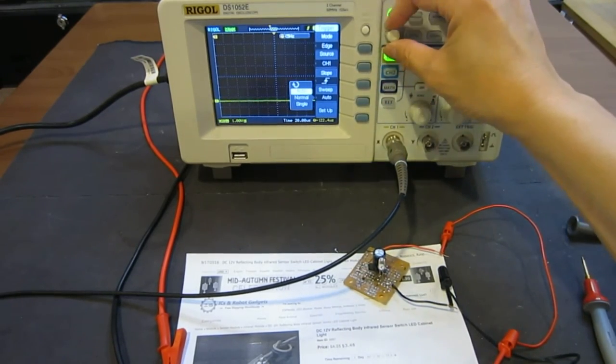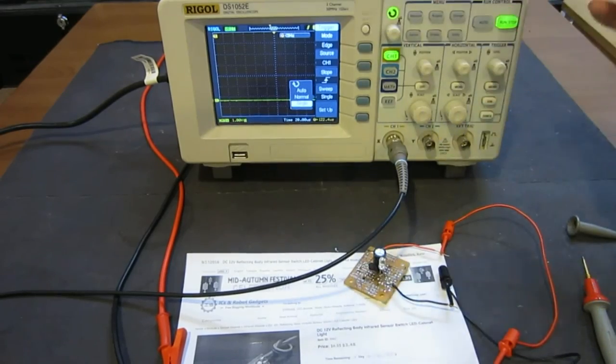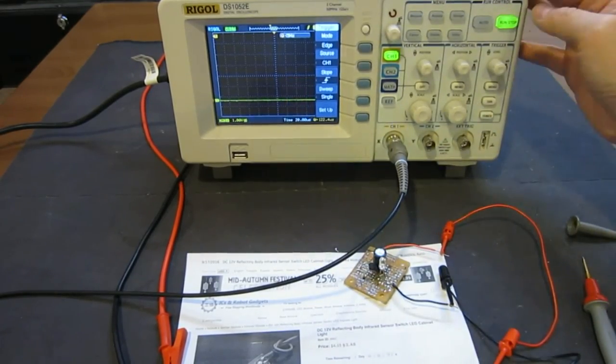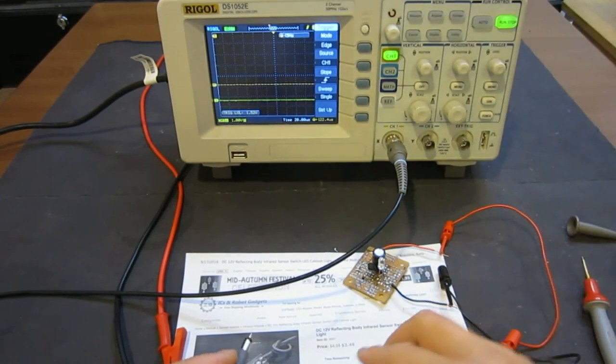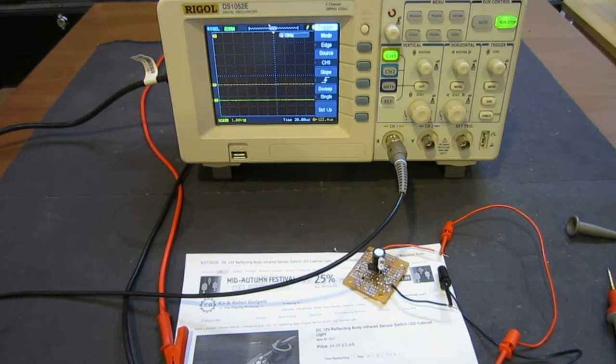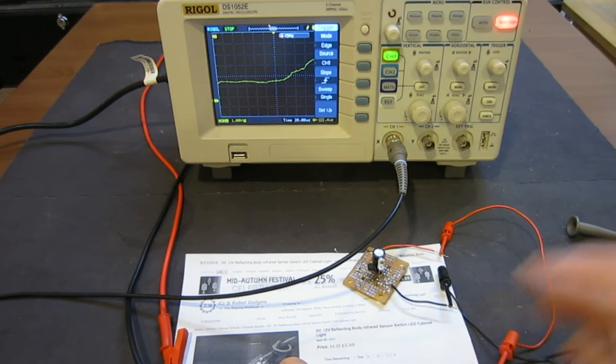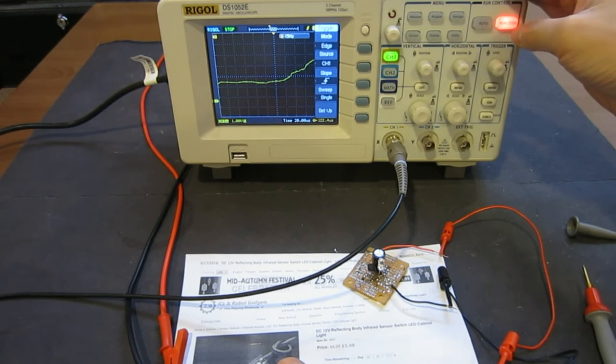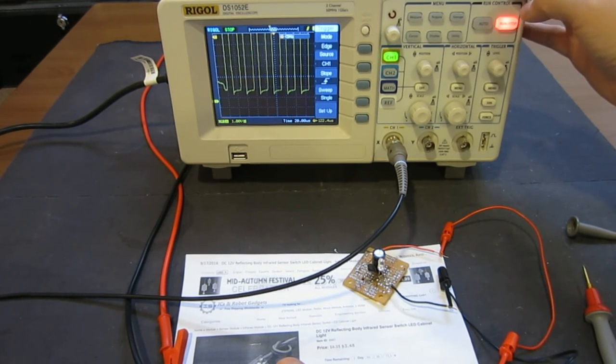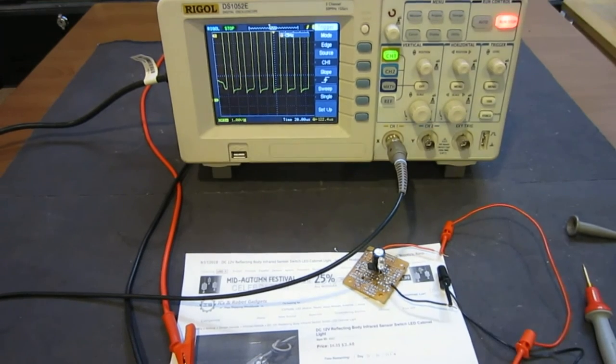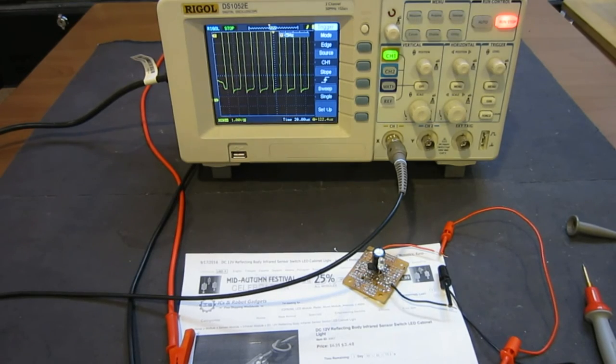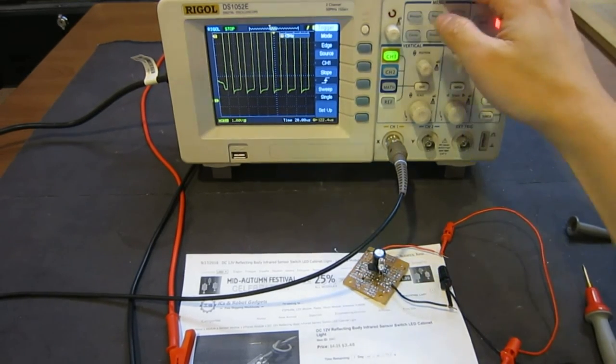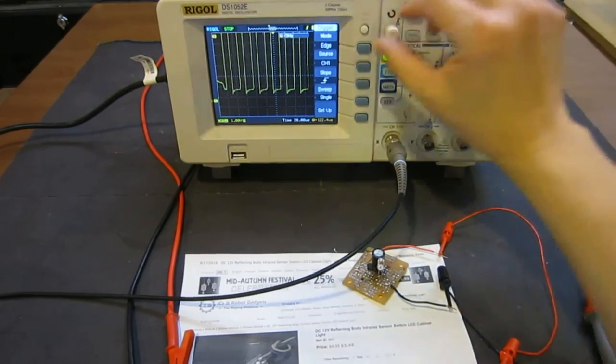Now, to do this, I will set the scope into a single shot mode. So basically we just want to capture the single pulse train. So we do a single sweep, and I would set the trigger level somewhere here so that it doesn't do a false trigger. So let me see here and we can let it run again. There we go.